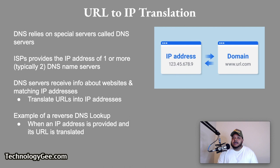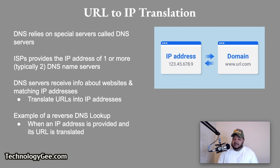Let's talk about URL to IP translation. DNS relies on special servers across the Internet known as DNS servers. Each Internet service provider, also known as an ISP, provides the IP addresses of one or more DNS name servers to devices that connect to it. These DNS servers receive information about websites and the IP addresses matching them, and use this information to translate URLs into IP addresses. When an IP address is provided and its URL is translated, that is an example of a reverse DNS lookup.